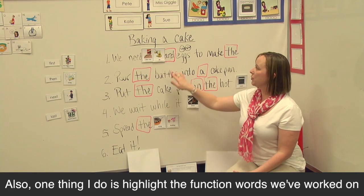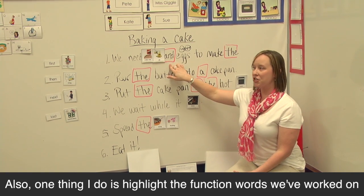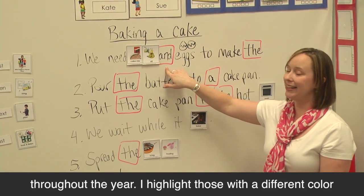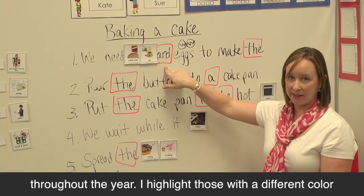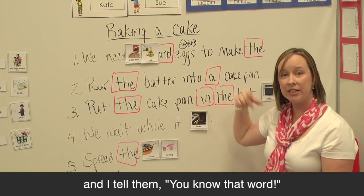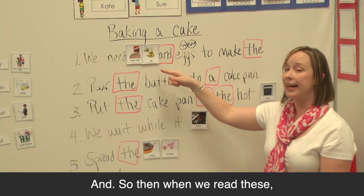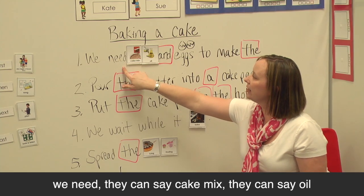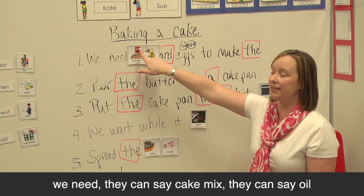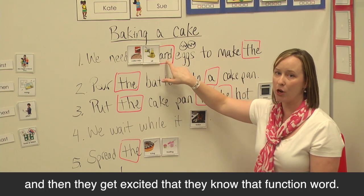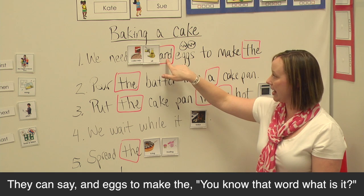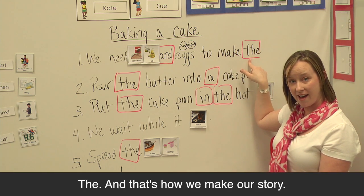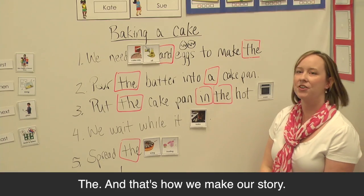One thing I do is highlight the function words we've worked on throughout the year in a different color, and I tell them: you know that word, you can read that one — what is it? And. So when we read these: we need — they can say cake mix, oil — and they get excited that they know that function word. They can say and, eggs, to make the — you know that word, what is it? The. And that's how we make our story.